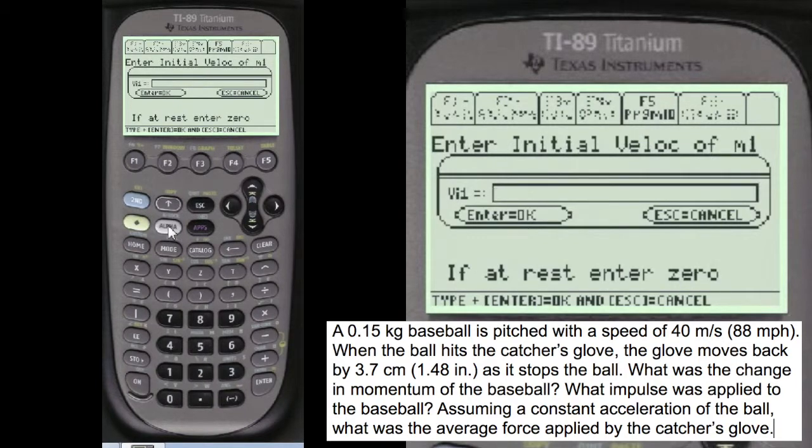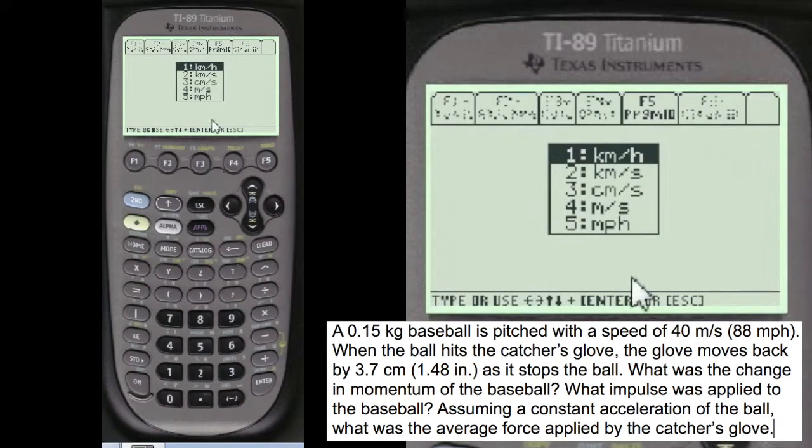Then we're going to enter the initial velocity that was given. Alpha 40. And in this case, meters per second, number 4.